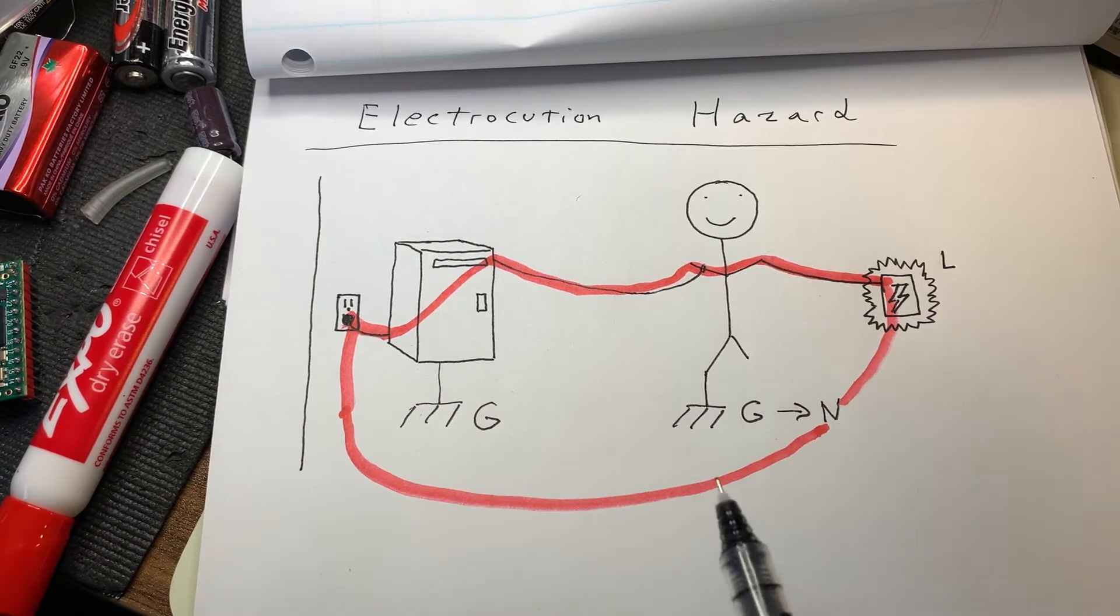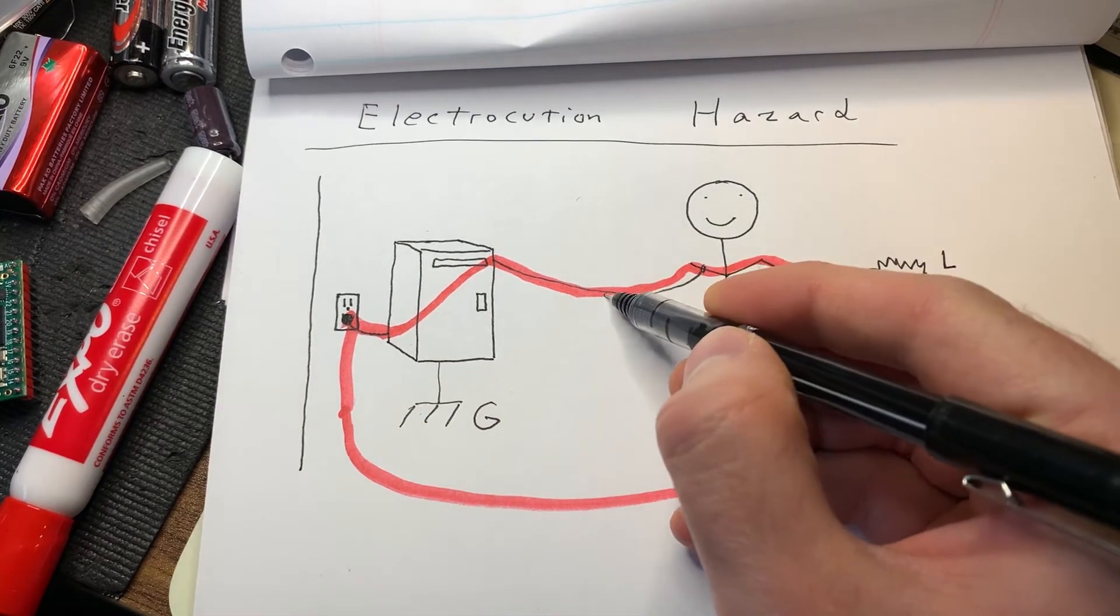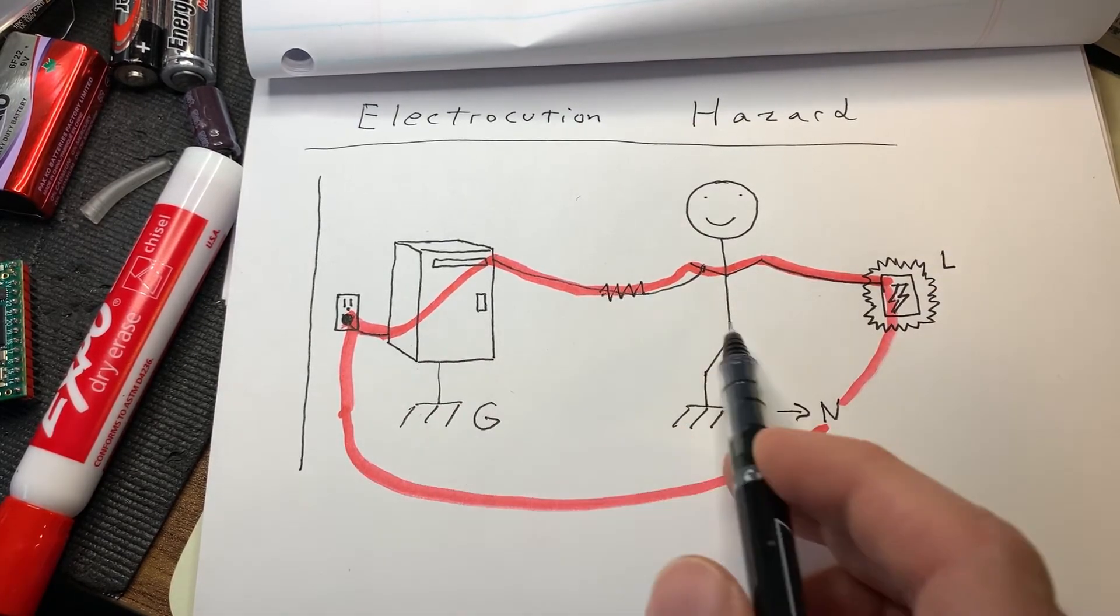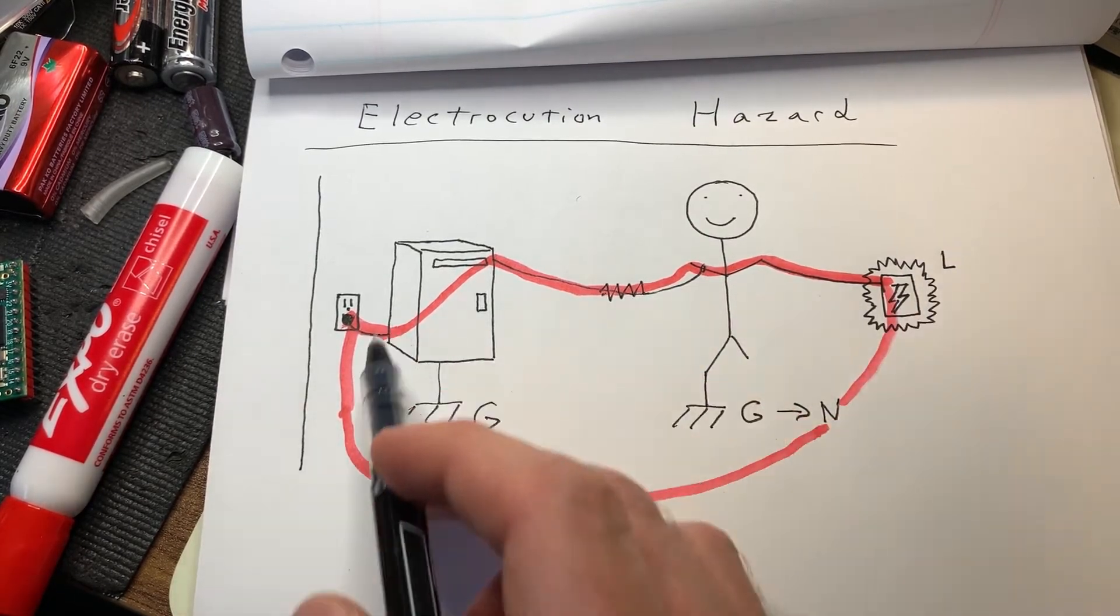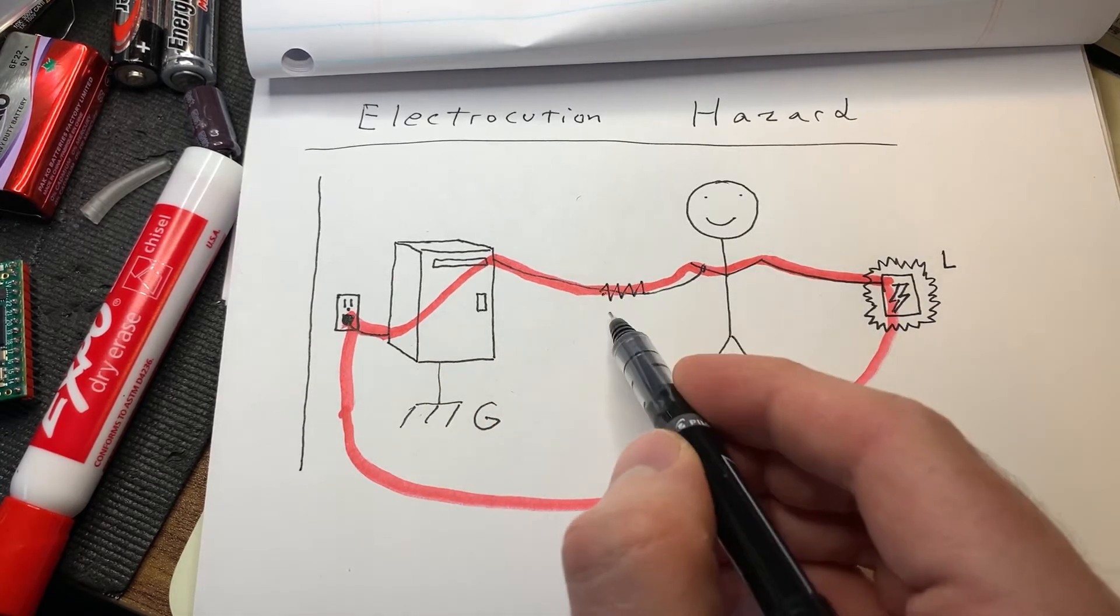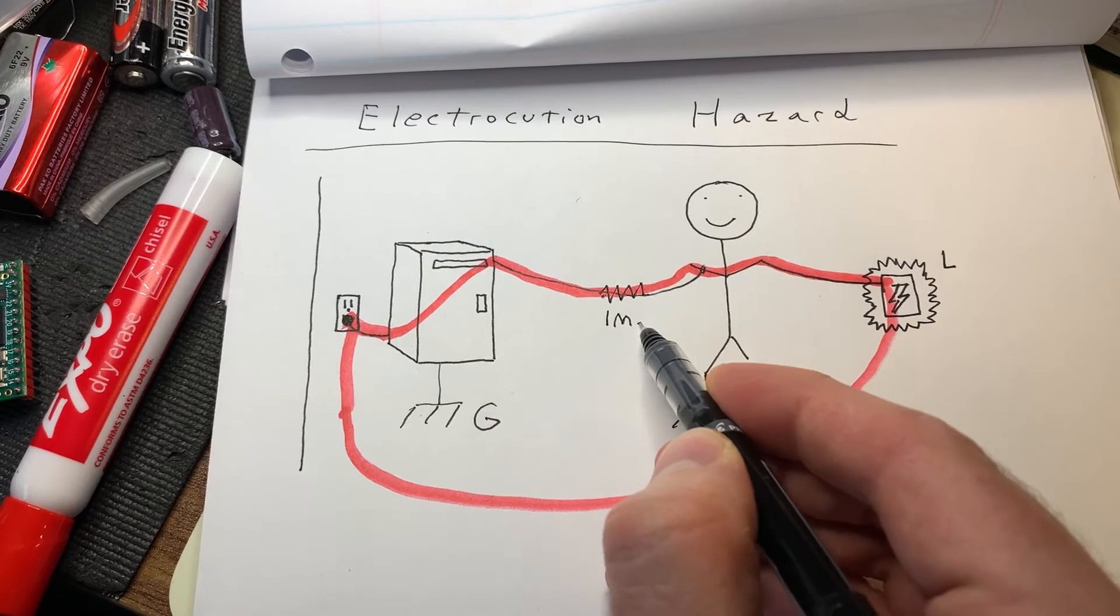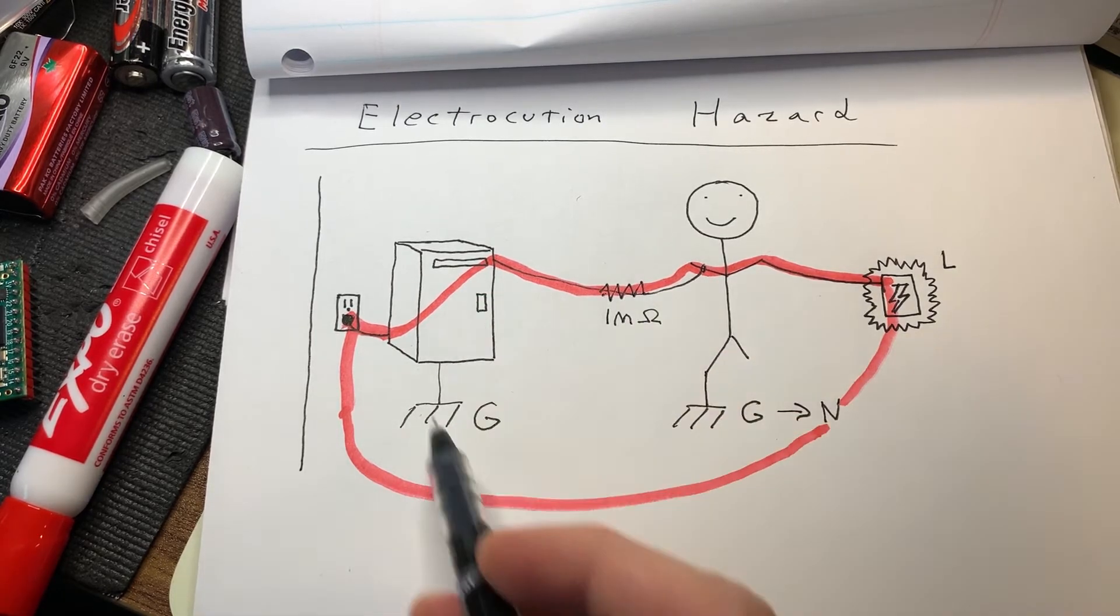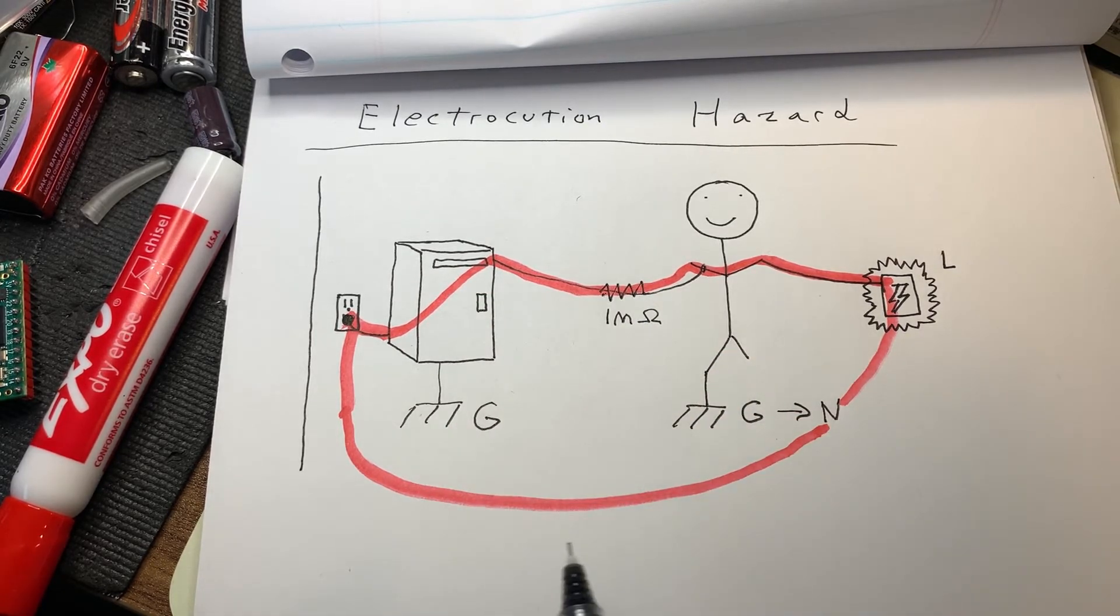And this is where having a proper wrist strap with a resistor is so important, because if you didn't have a resistor, or you were just touching the case, there would be nothing stopping this current from flowing. Whereas if you have a resistor in place in this case, in case it's a one mega ohm resistor, it's going to drop the possible flow of current so low that you're not going to have a direct path back to ground in this scenario.